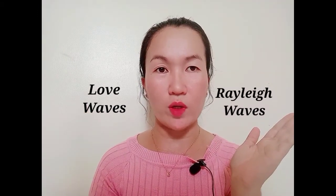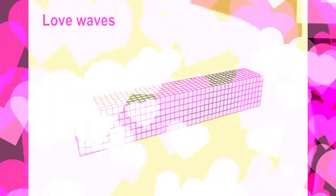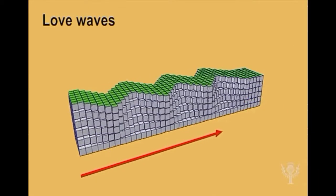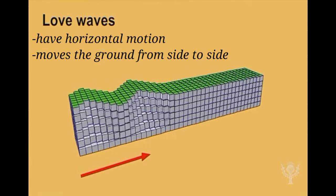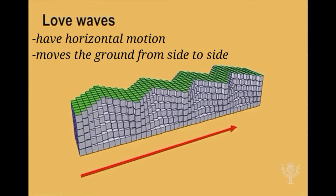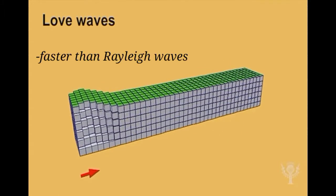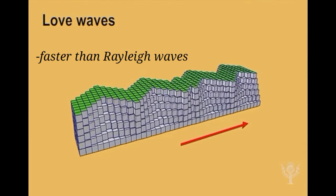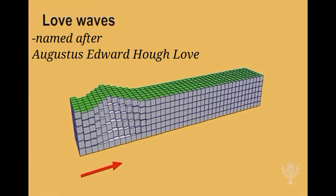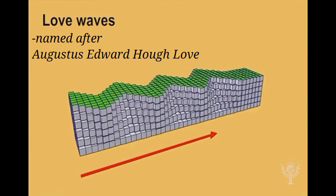Mayroon ding dalawang klase ng surface waves: ang love waves at ang Rayleigh waves. Love waves have horizontal motion that moves the surface of the Earth from side to side, perpendicular to the direction of the wave. Love waves are faster than Rayleigh waves. These waves are named after Augustus Edward Howe Love, a British mathematician who worked out a mathematical model for this wave.